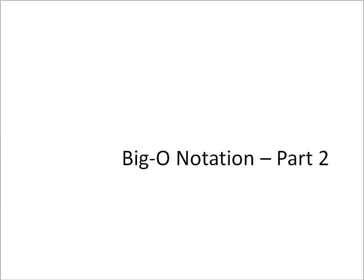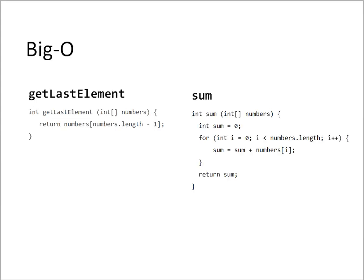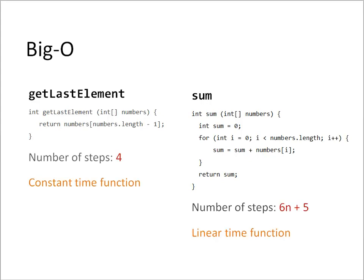In Part 1, we looked at two methods and we determined the complexity by counting the number of steps required for the execution. In this video, we are going to graph the number of steps to build an intuitive understanding of what Big O is all about and how it can be used to classify algorithms based on their scalability.